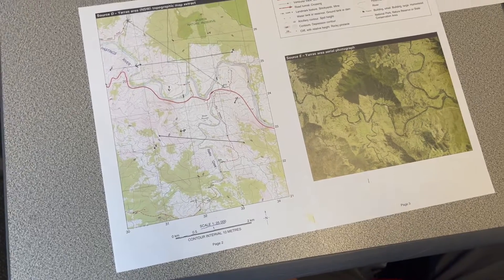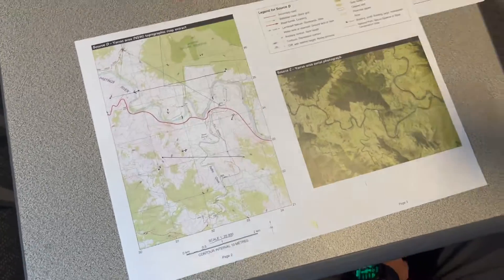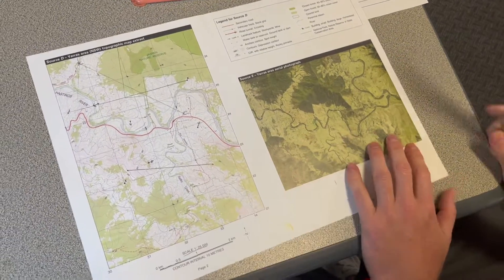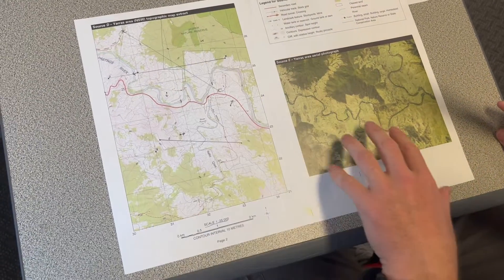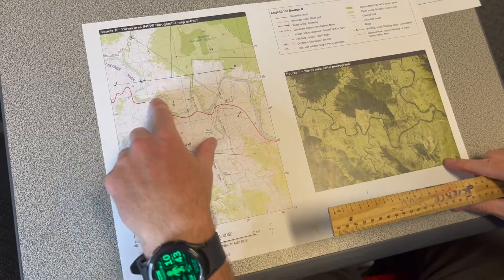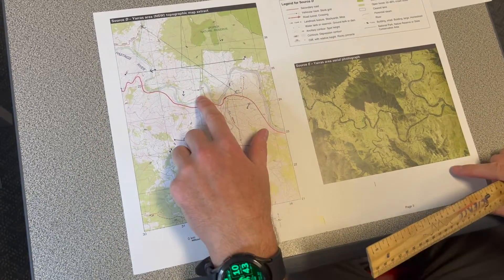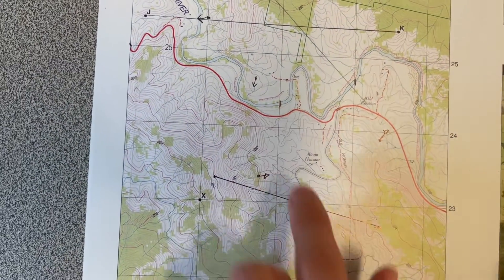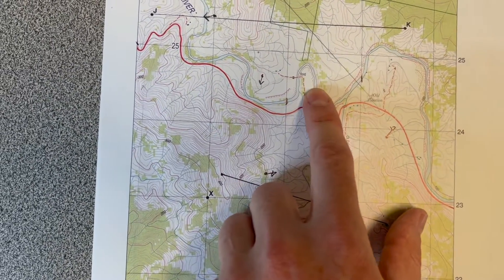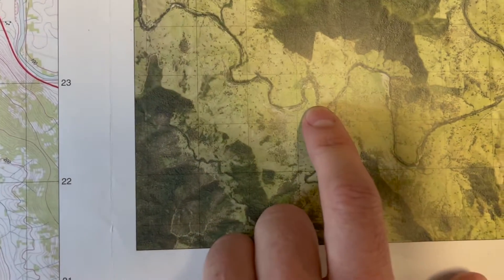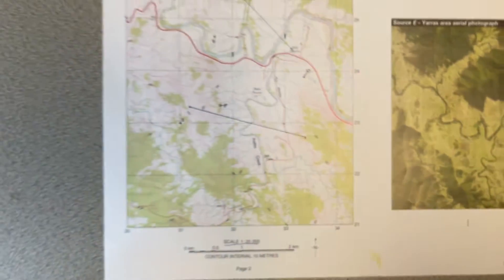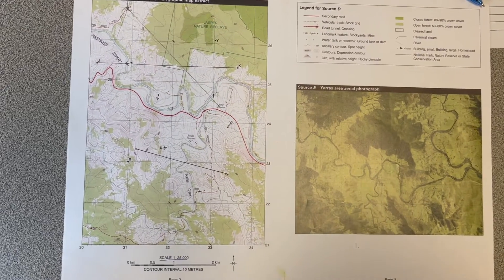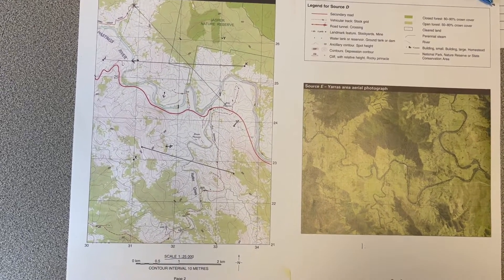Now that we have that in mind, we get a ruler — you need a ruler, you can't eyeball this, you have to measure it — and we find a common feature. The biggest common feature that jumps out is this river that meanders straight through the middle of the map, particularly this meander of the river, this big horseshoe shape. You can see it is clearly in the middle of this map and clearly in the center of the photo. Given the measurements you're about to see, I think the writers of the HSC actually designed it so you would use that exact feature.